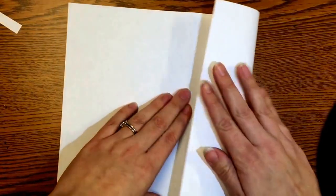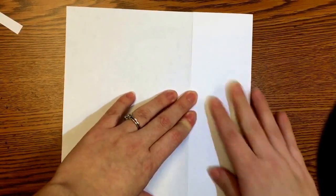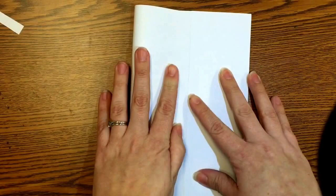From there you're going to do a shutter fold to the middle crease. You're going to take each edge and fold it into the crease in the middle of the paper that you made.